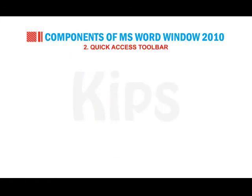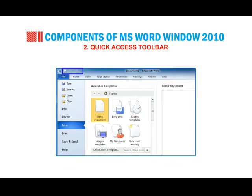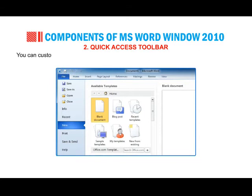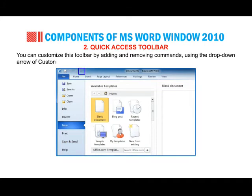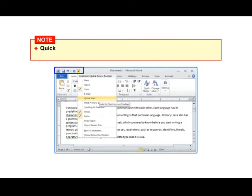Quick Access Toolbar is located at the upper left corner next to the word icon. It provides easy access to most frequently used command buttons. By default, three buttons are present: Save, Undo and Redo. You can customize this toolbar by adding and removing commands using the drop-down arrow of Customize Quick Access Toolbar. Note that the Quick Access Toolbar is customized separately for each application of MS Office 2010.